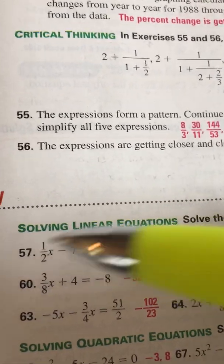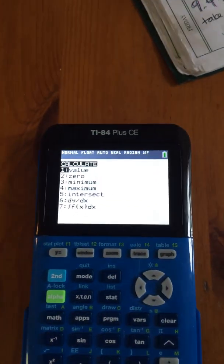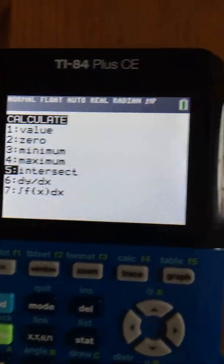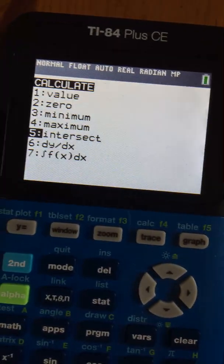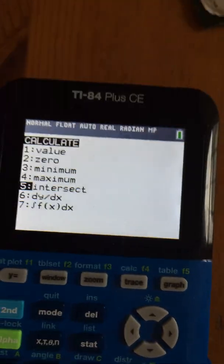So we can solve this by putting this end and that end, and then find out where they intersect. And you can find the intersect button under second trace. See, number five intersect. So that is another way where you can just use your calculator to get the answer without actually doing the math, or you could use your calculator to check your work.